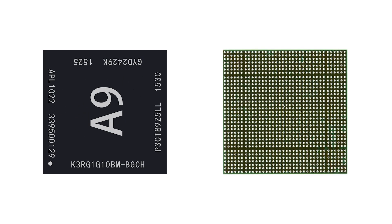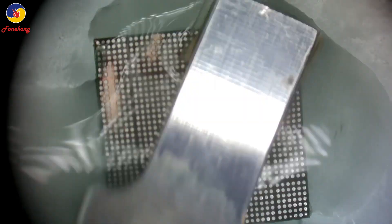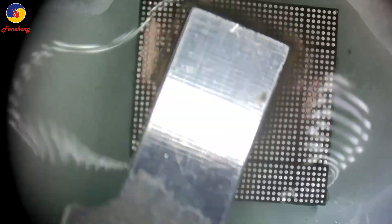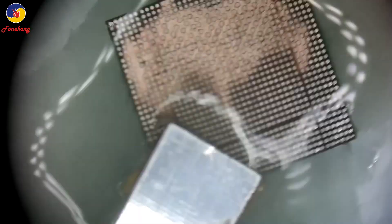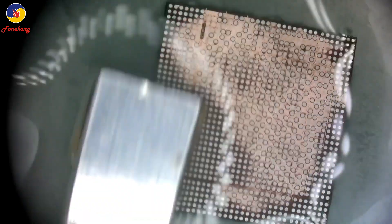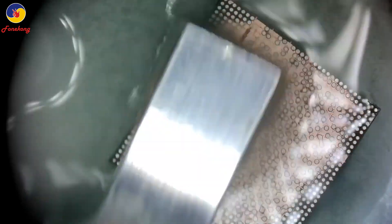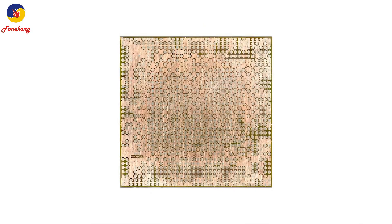This is A9 CPU. Now let's start polishing the first layer, the pads layer. Many, many pads are polished. You see the gold? This is real gold, real gold. Done, many pads.